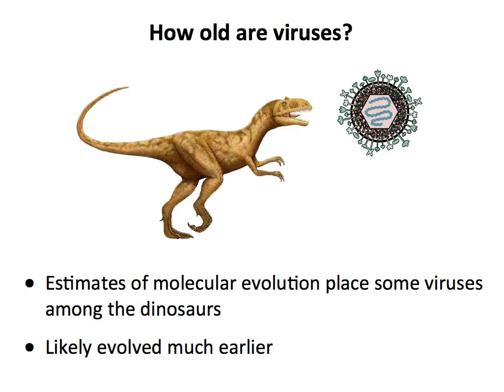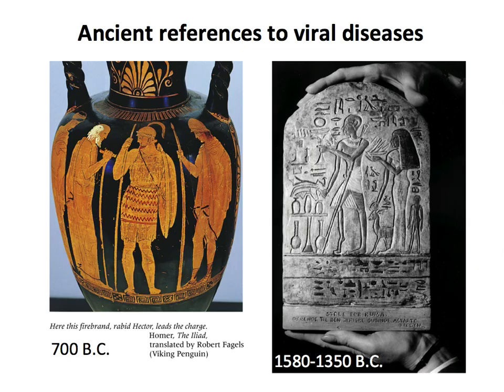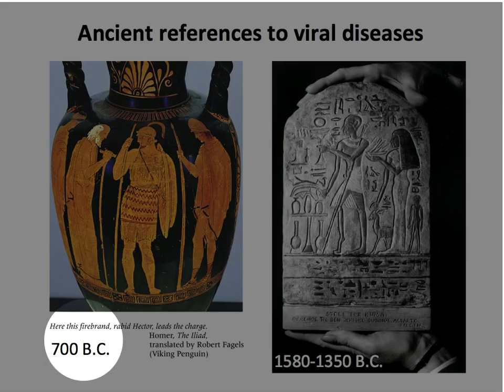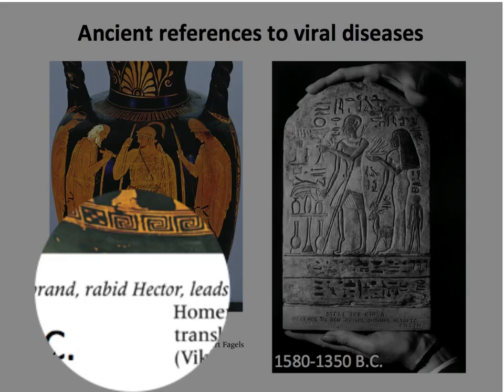We now can use sequence analysis — we're sequencing many, many viral genomes — and we can go further back. We're going to have a lecture on evolution where we talk about the specific mechanisms that led to the evolution of these viruses. Throughout written history, we can find what we think are references to viruses. For example, this 700 B.C. piece of pottery makes a reference to rabid Hector — rabies virus.